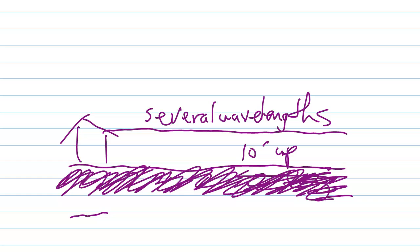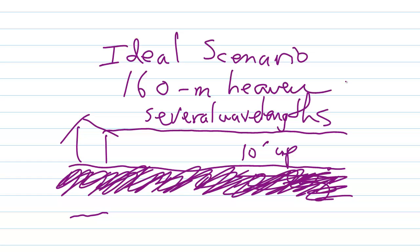Several wavelengths long. And beverage antennas are especially popular on bands like 160 meters. So let's just dream the ideal scenario, okay? 160 meter heaven. A great huge ranch in South Dakota on flat land. Here is your ham shack. You string beverages up in all directions. 36 of them, 10 degree increments around the compass.